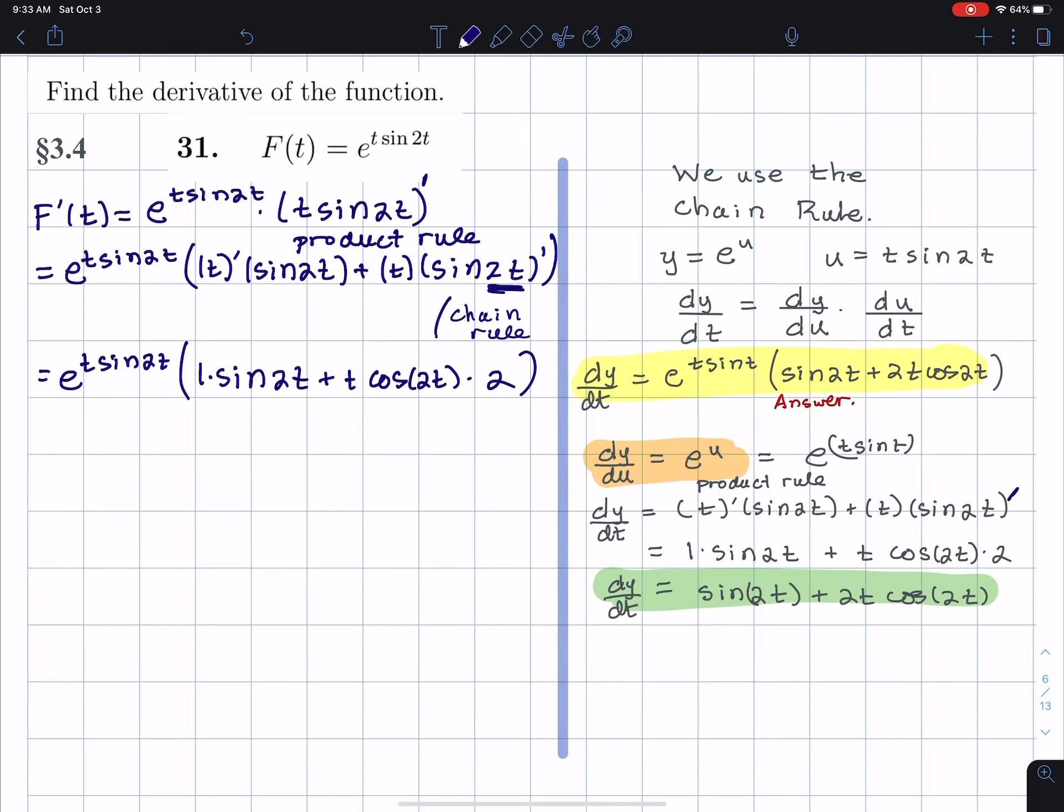There was the larger problem's chain rule, then we got into product rule and then a little chain rule. So this is a hard problem, right? So I mean, let's just, I want to point that out.